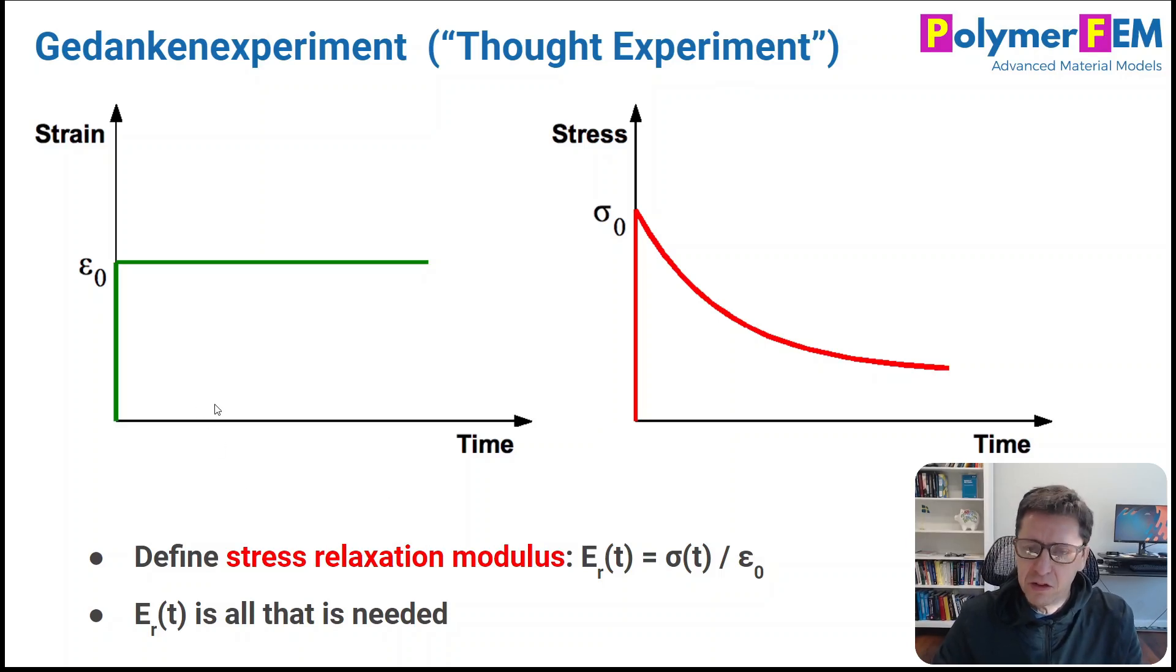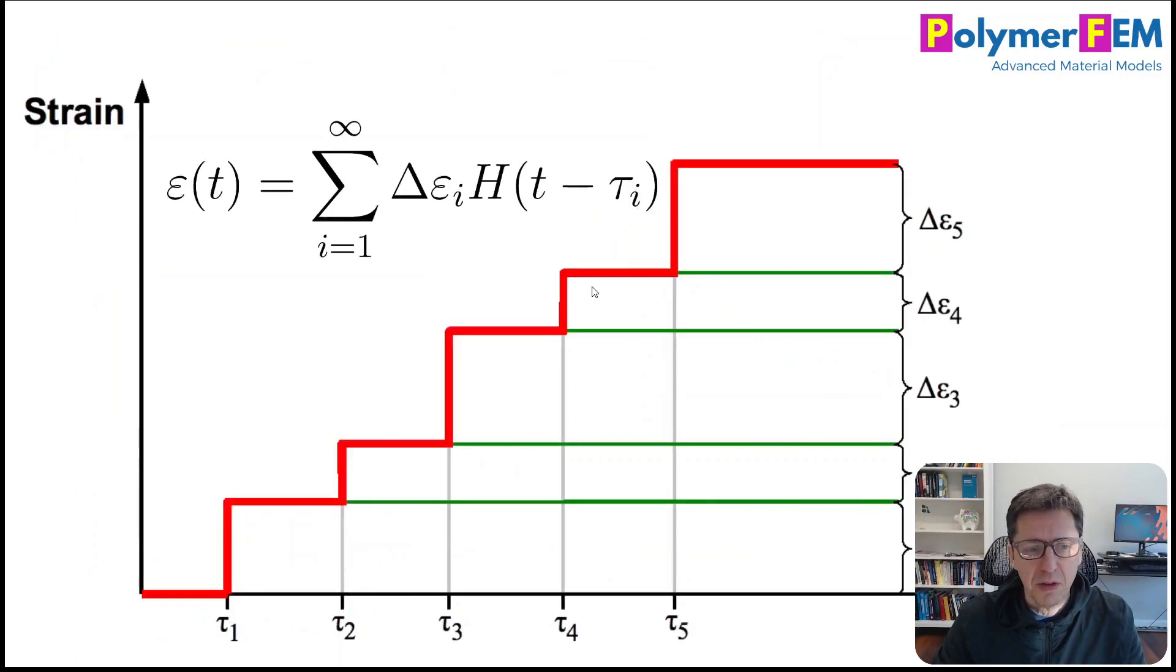So clearly that's true if we just do a jump in strain, because that's what we did here. Let's do something a little bit more interesting. Well, most of the time we don't just jump a strain and we hold it. We have some kind of arbitrary strain history.